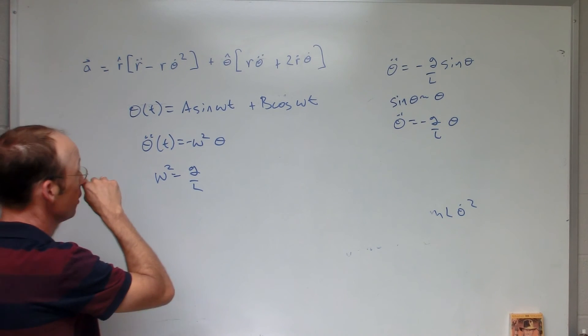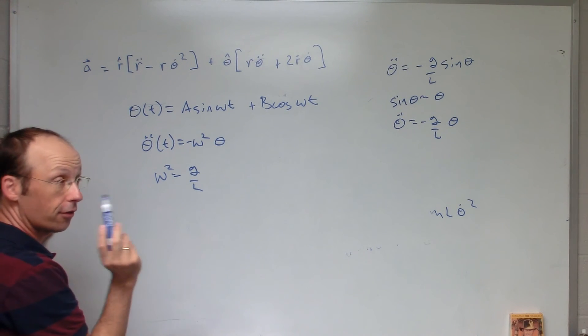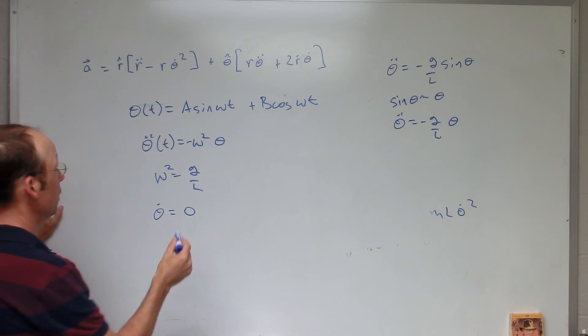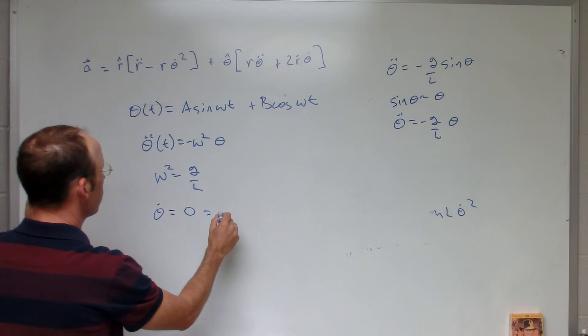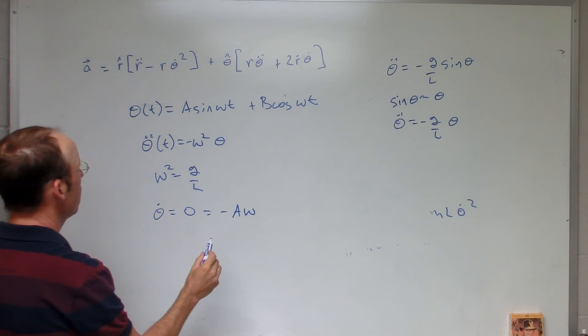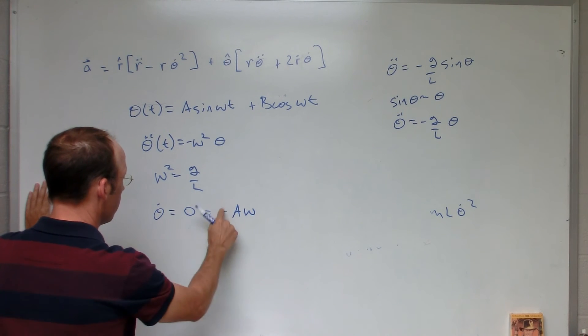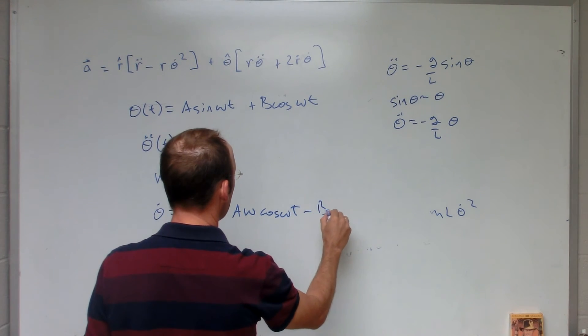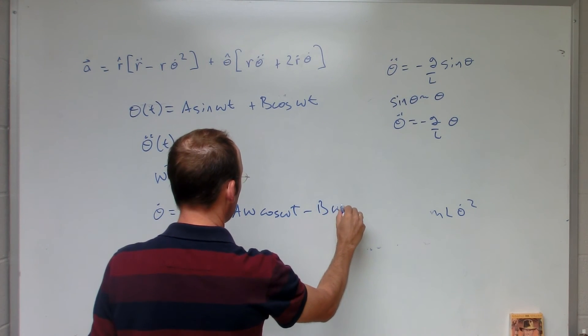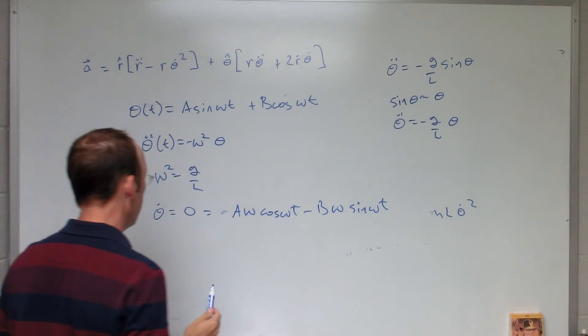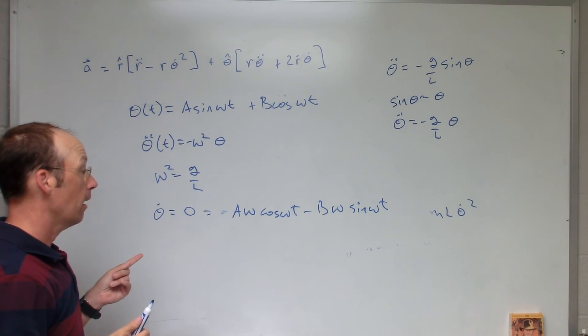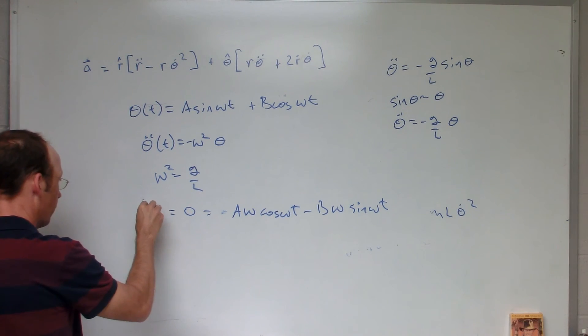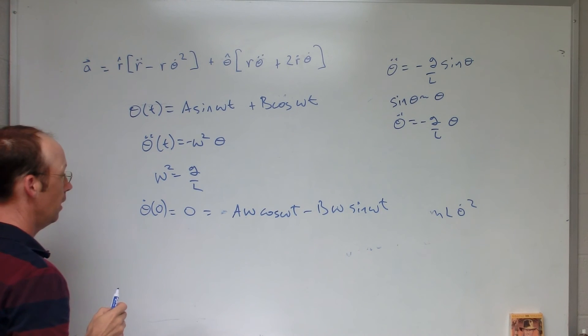So that means at t equals zero, I know that since it's from rest, I know theta dot equals zero. I've released it from rest. So theta dot is going to be equal to negative a omega, no I'm sorry, positive a omega cosine omega t minus b omega sine omega t. Now, but if I put in t equals zero, because this is at, I said at rest, at least at rest at t equals zero. At t equals zero, then I could put in t equals zero.